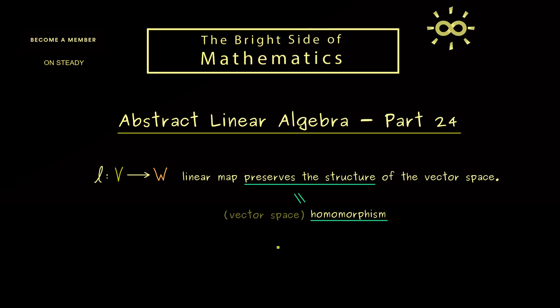However, if we want to be precise, we would say a linear map is a vector space homomorphism. And at this point I can already tell you,